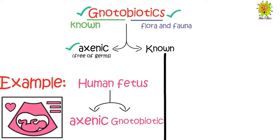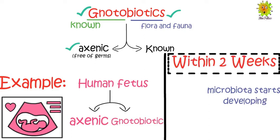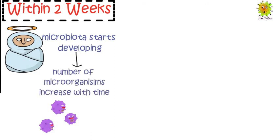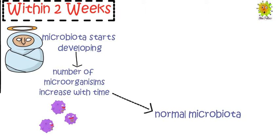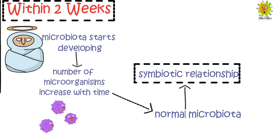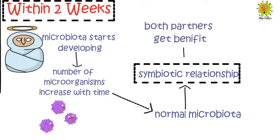After the birth of a baby, normal human microbiota starts developing within the first two weeks of a baby's life. The number of these microorganisms keeps increasing with time. These microorganisms, called normal microbiota, live with humans by creating a symbiotic relationship — a relationship where both partners, the human and the microbes, get benefits from each other.